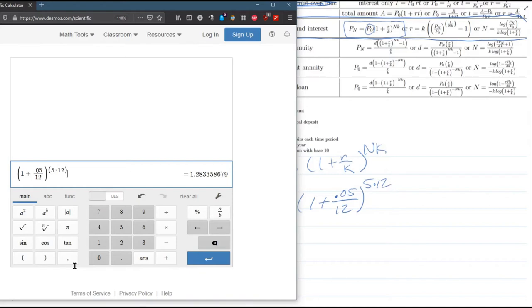So what we get is 1.283335. Let's keep 5 decimal places. 1.28333. So I'll do 1.28336.